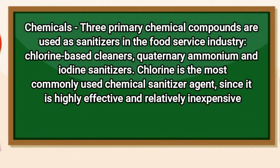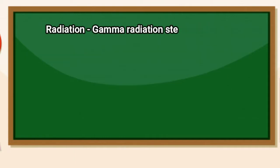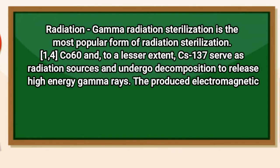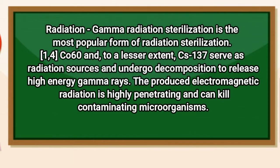Number two is chemicals. Three primary chemical compounds are used as sanitizers in the food service industry: chlorine-based cleaners, quaternary ammonium, and iodine sanitizers. Chlorine is the most commonly used chemical sanitizer agent since it is highly effective and relatively inexpensive. Number three is radiation. Gamma radiation sterilization is the most popular form of radiation sterilization. Co-60, and to a lesser extent Cs-137, serve as radiation sources and undergo decomposition to release high-energy gamma rays. The produced electromagnetic radiation is highly penetrating and can kill contaminating microorganisms. So the three sanitizing methods are: heating, chemicals, and radiation.